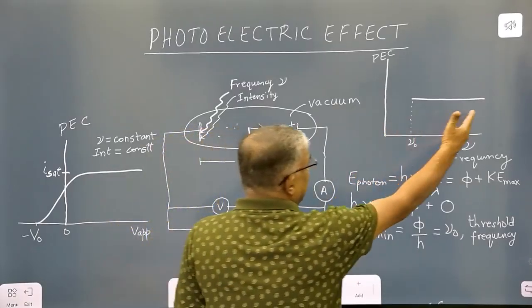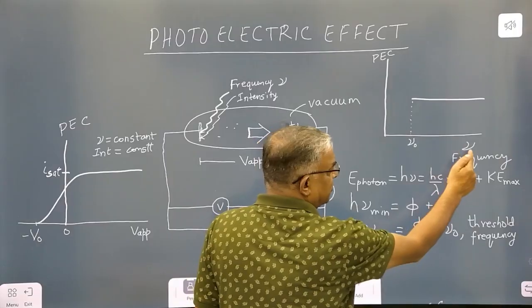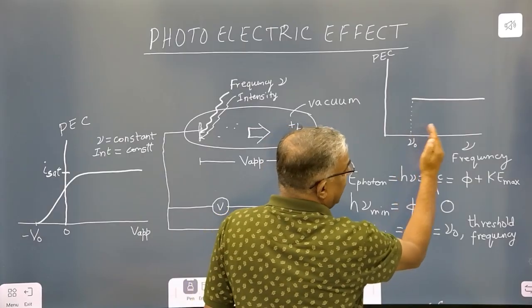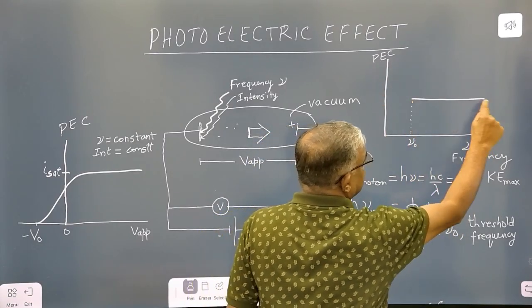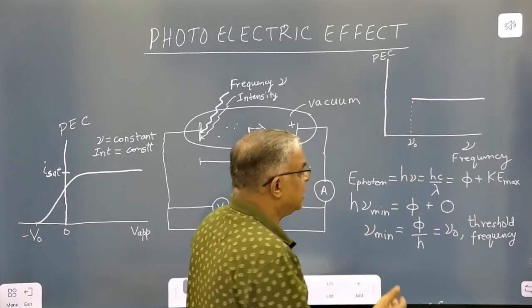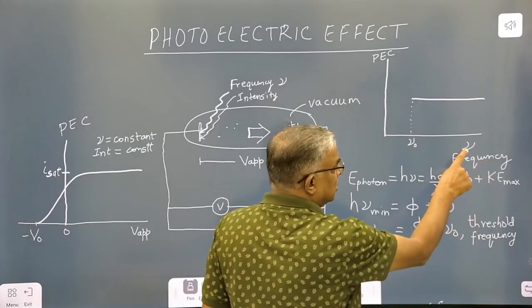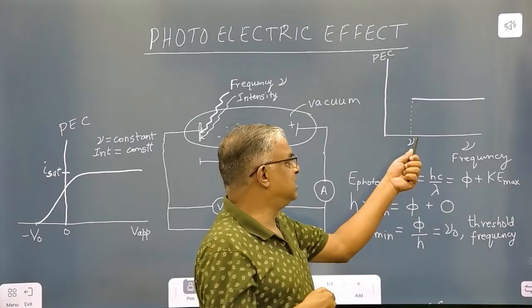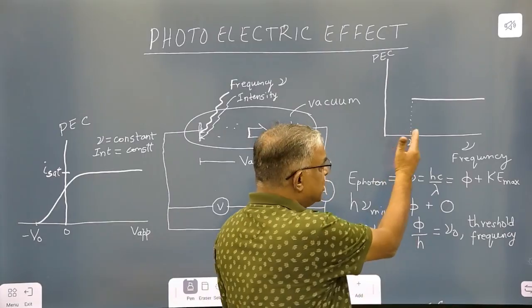This graph was obtained from the experiment, which shows that as long as the frequency of light is equal to or larger than the threshold frequency, the photoelectric current remains constant. This graph also tells us that the photoelectric current does not depend on the frequency of incident light, as long as the frequency is at or above the threshold frequency. Of course, below threshold frequency, there is no emission.